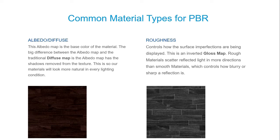A roughness map controls the surface imperfections. Now I can dial in that photorealism — like we've all tried to do a perfect metal, but we want to tell the story of these materials, add character and fine details. That's what the roughness map does. You'll also see on some websites a glossiness map — that's just an inverted image of the roughness map. Wherever's dark is going to be more reflective and shiny; wherever's white is going to be diffuse. If you see a glossiness map, just invert it — we can do that in Revit too.